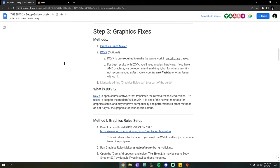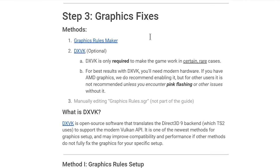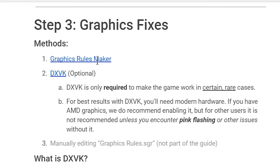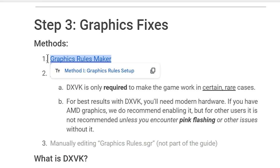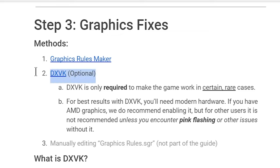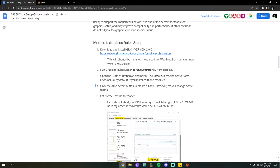The first step in this video — which is step three in Osab's guide — is the graphic fixes. We're going to use the Graphics Rules Maker, which will usually solve almost all of your problems. If you are still having pink flashing after this, we can come back to that option at the end. For now, I'll go with what's going to work for everybody. Graphics Rules Maker is a program made by Sims Network.